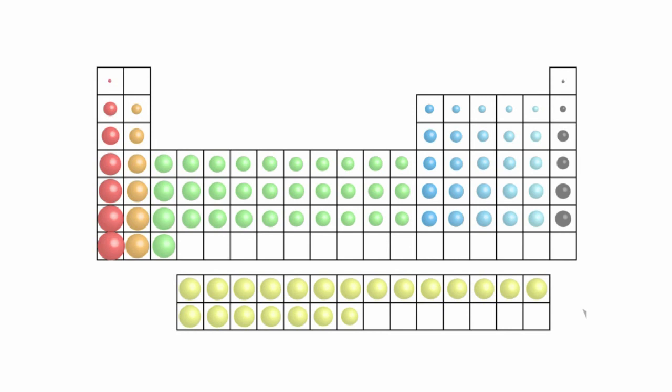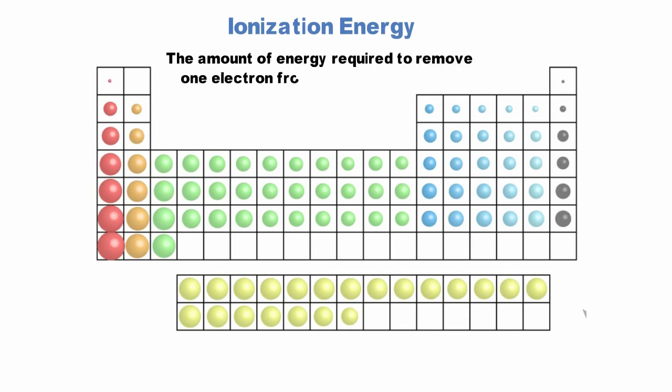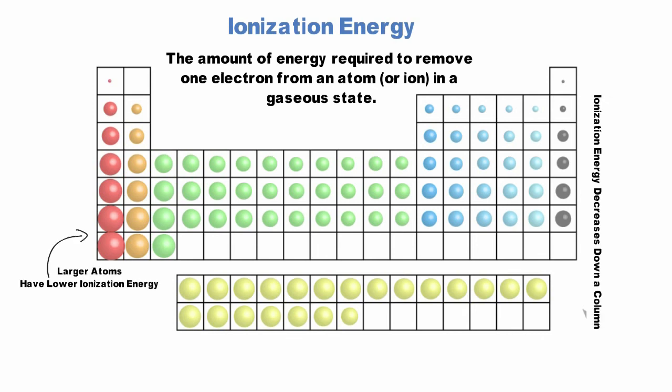The final atomic property that we need to be aware of is ionization energy. Ionization energy is the amount of energy required to remove one electron from an atom or ion in a gaseous state. Moving down a column on the periodic table, the principal quantum number n of the outermost electrons increases. Orbitals are larger and therefore it takes less energy to remove an electron because they are farther from the nucleus.